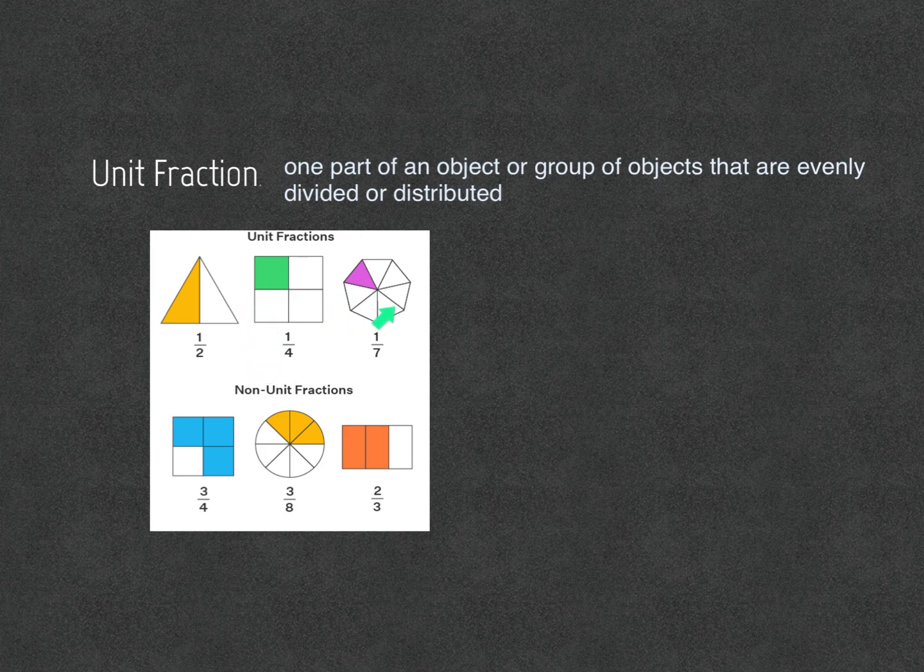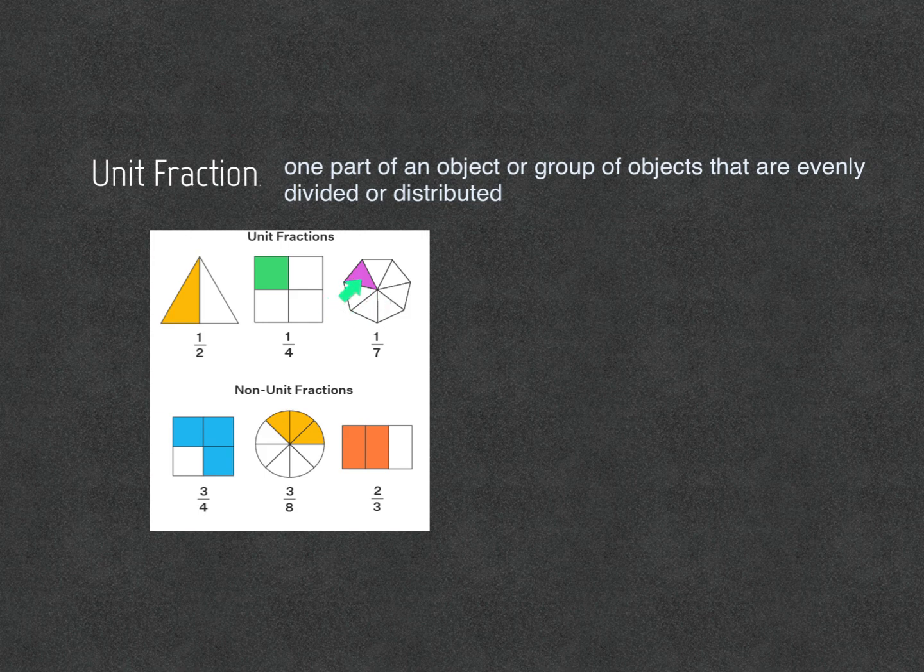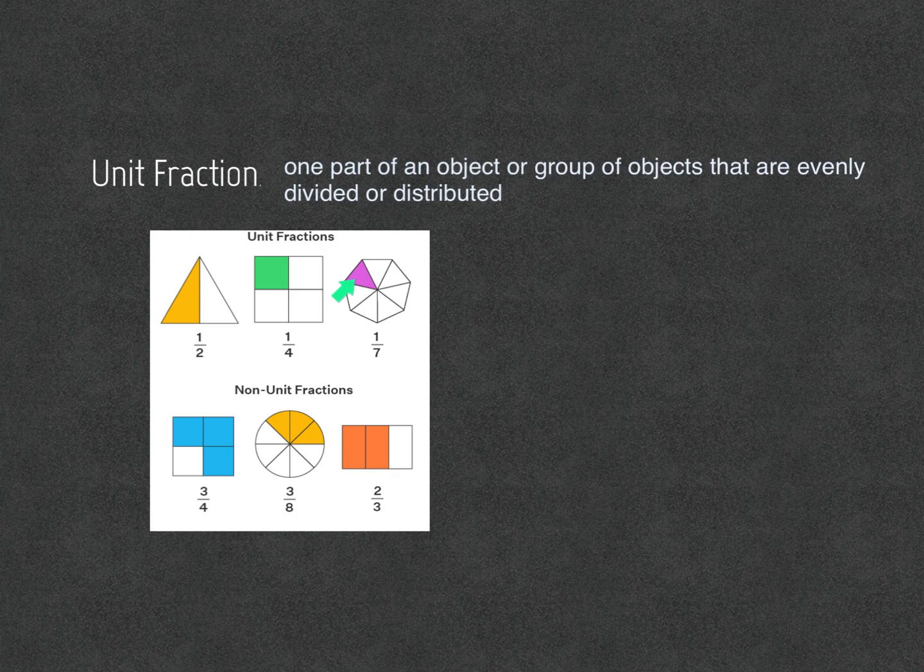This one is the same way. One triangle is shaded out of one, two, three, four, five, six, seven. So, one over seven. One over seven.